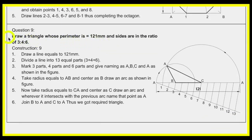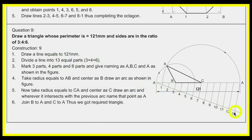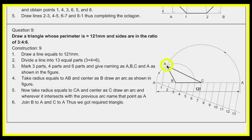They will give you a perimeter and ask you to draw a triangle, rectangle, or any quadrilateral. In this type of sum, divide into that many number of parts — here it is 3:4:6, so divide into 13 parts. Avoid using the mathematical method; just draw it geometrically. Divide into 13 parts, then mark 3, 4, and 6, and draw the arcs.